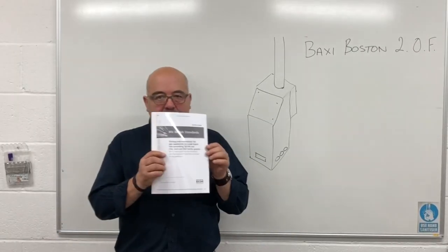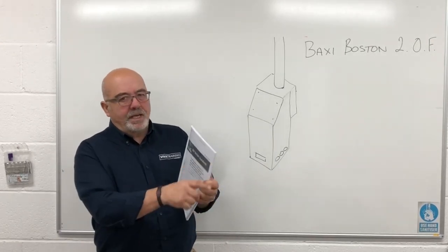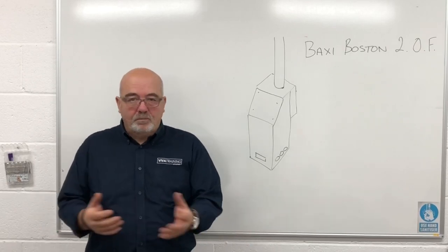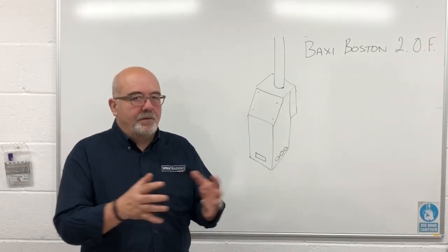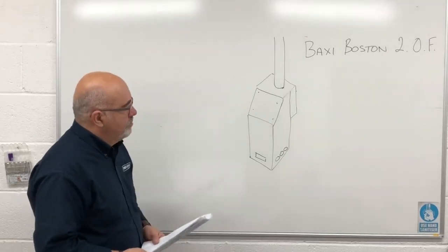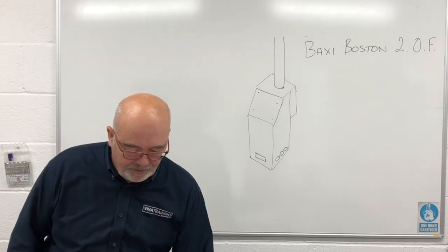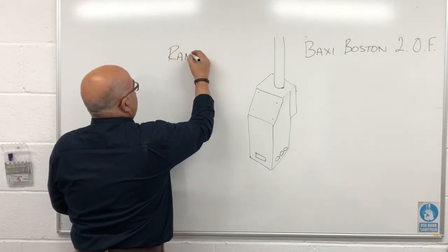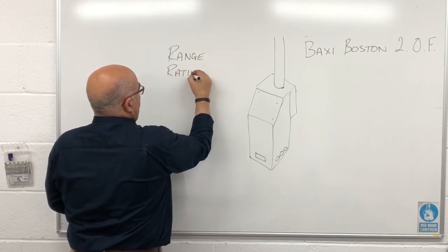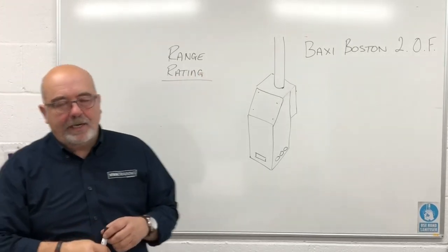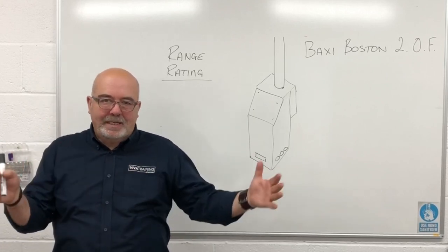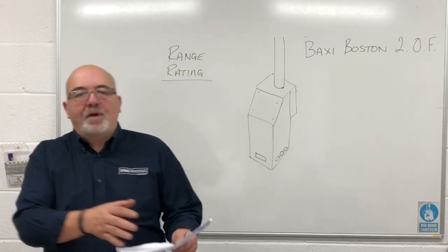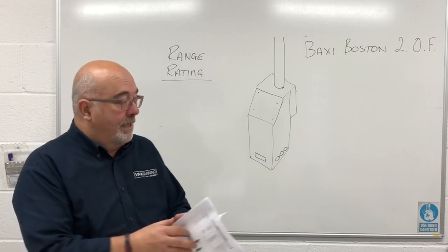BS 5440 Part 2 — always make sure it's the up-to-date version, which is 2009 in this case. On this particular appliance you'll find something called range rating. Range rating means one appliance will cover a number of settings rather than being specific to the actual load of the property — you buy a boiler suitable for a range of loads. That's the best description I can give you.